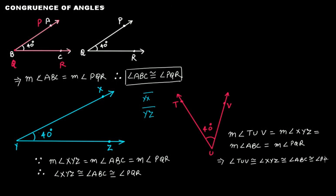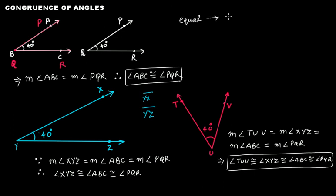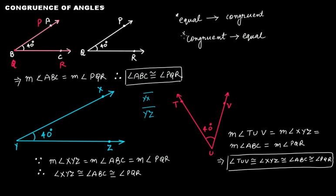Therefore, angle TUV is congruent with angle XYZ, which is congruent with angle ABC, which is congruent with angle PQR — all these angles are congruent. So, if two or more angles are equal in measure, the angles will be congruent. And if someone tells you that angles are congruent, the reverse is also true — they are equal. Both statements mean the same thing. That was all about congruence of angles; in the next video we will learn about congruence of triangles.